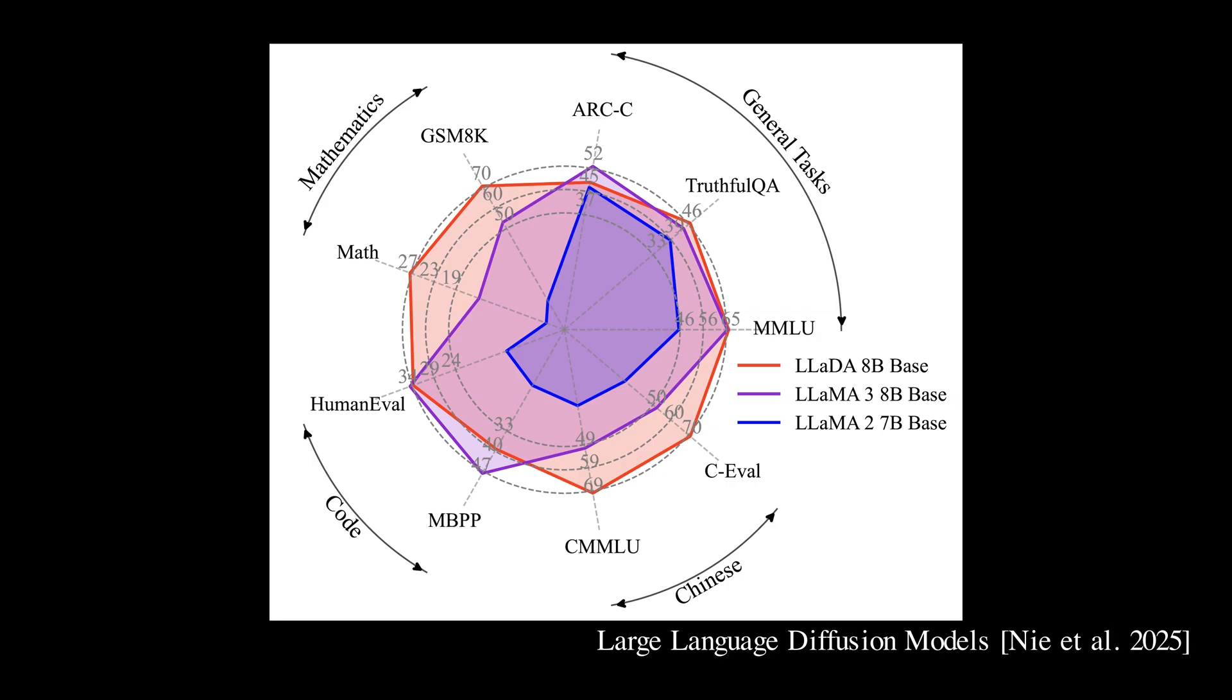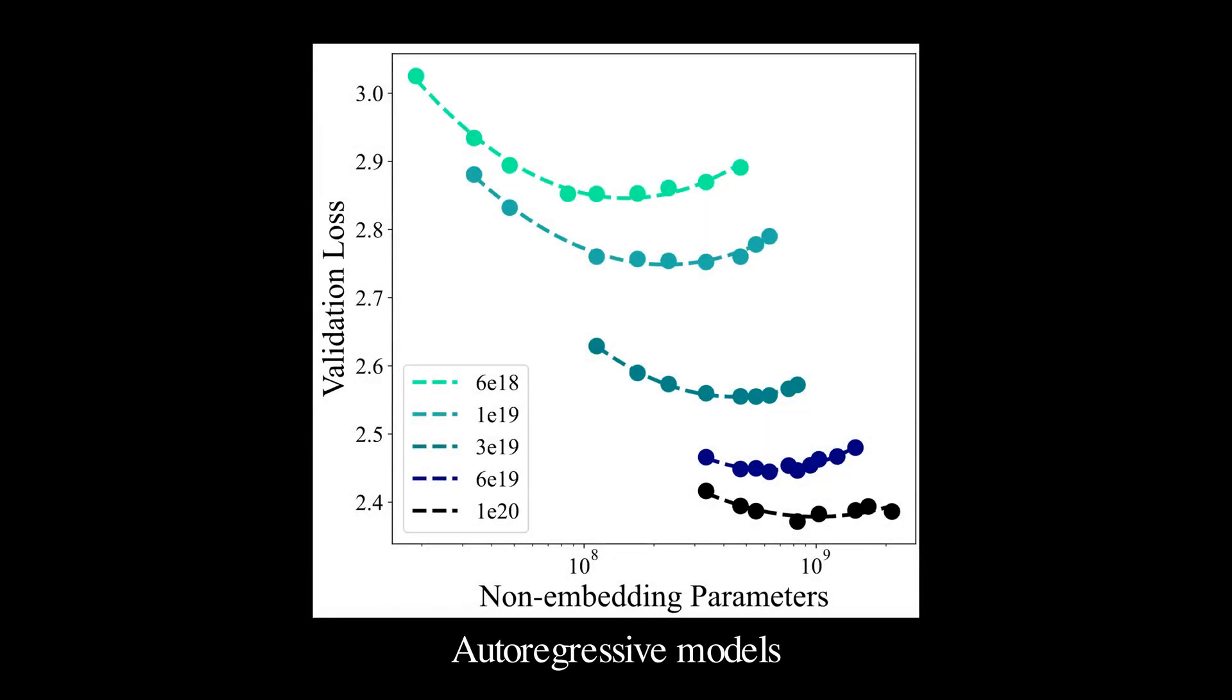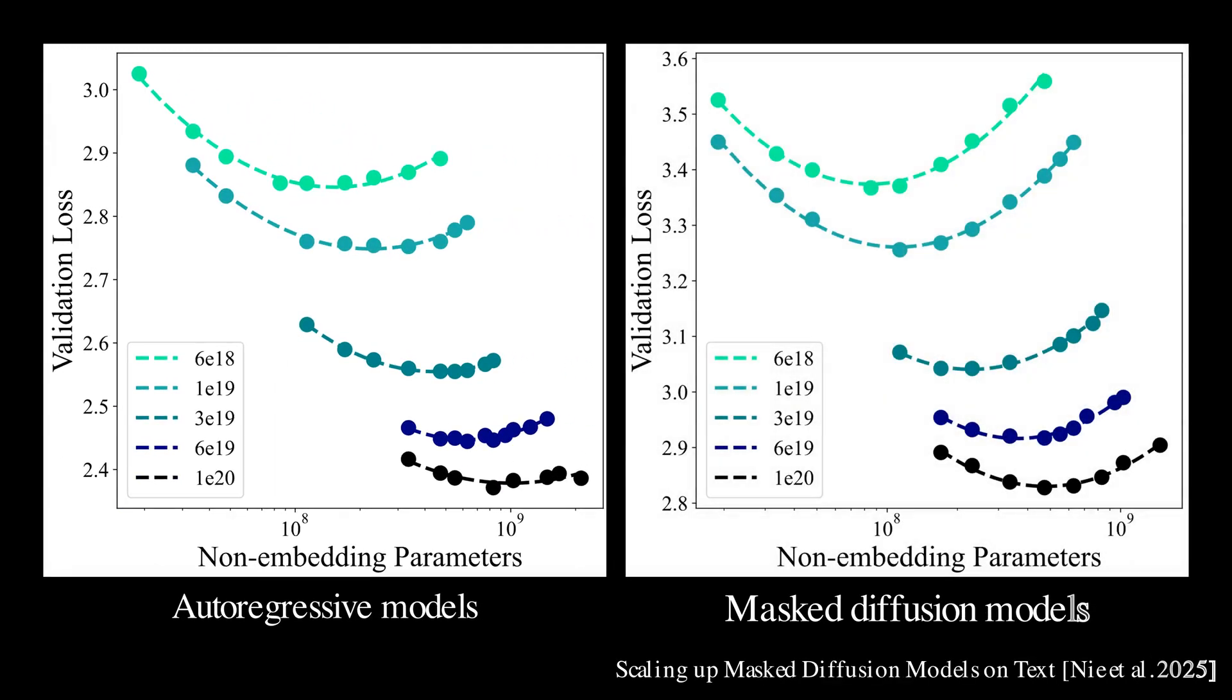But does it scale? Can we get increasingly stronger diffusion models by scaling up the model parameters and compute? With autoregressive models, if we increase the compute budget measured in flops, the validation loss drops smoothly. The best validation loss follows a clear power law scaling. With mask diffusion models, something interesting happens. As we ramp up the compute budget, the optimal validation loss also decreases, at a rate comparable to that of autoregressive models. This means that when trained optimally under the same compute constraints, mask diffusion models can match the scaling behavior of autoregressive models.